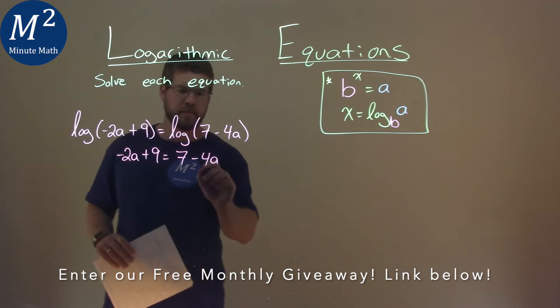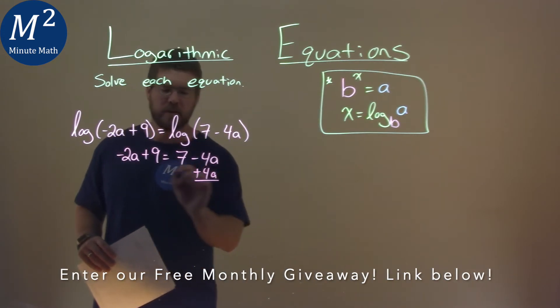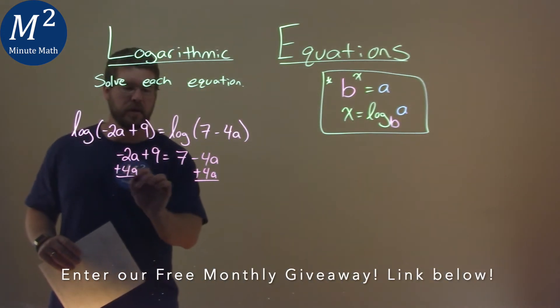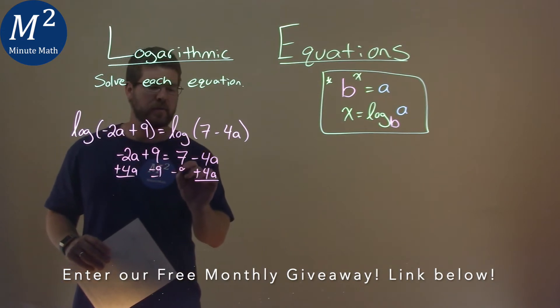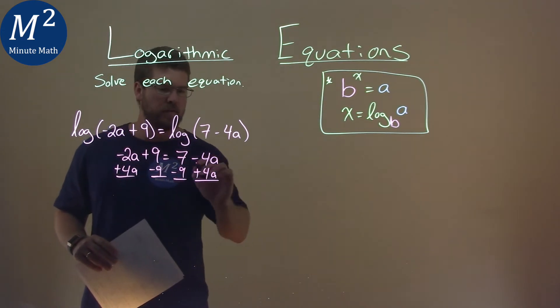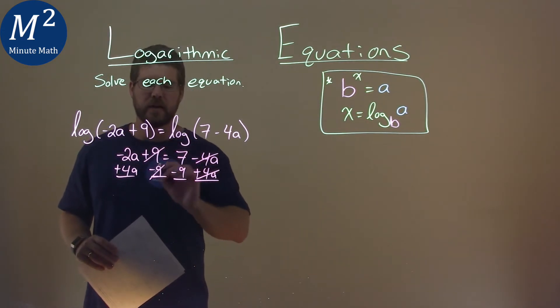Much easier to solve. I add 4a to both sides as we combine our like terms, and I'll subtract 9 to both sides as well. These 4as will cancel. These 9s will cancel.